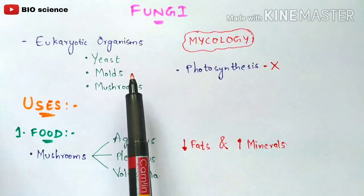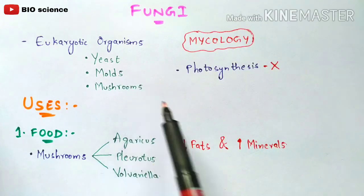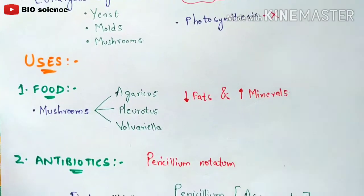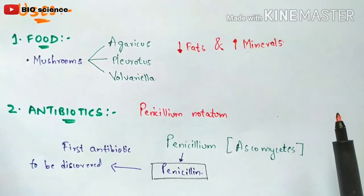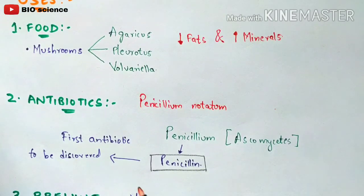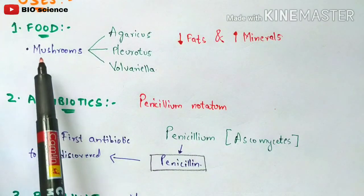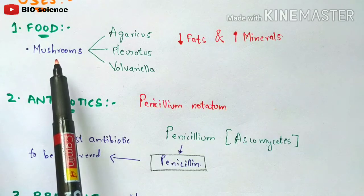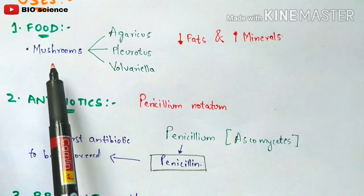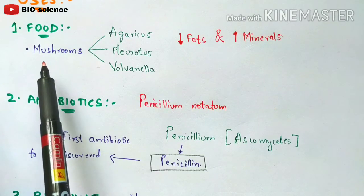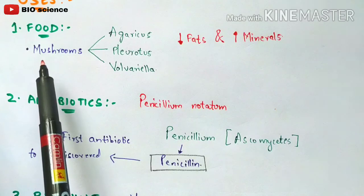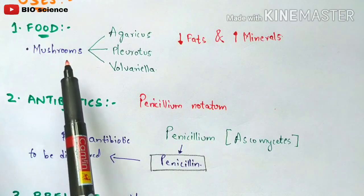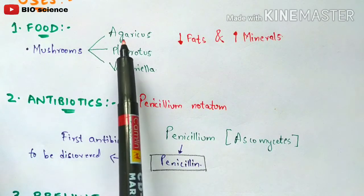Now let us see some of the benefits of fungi. The first use is food — fungi is used as a source of food. One of the best sources is mushrooms, which are also considered fungi. There are three types of mushrooms available in markets worldwide.